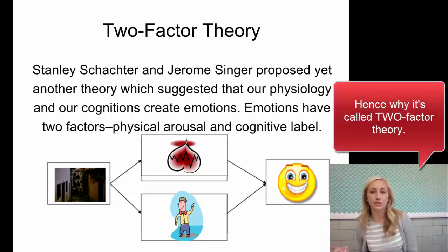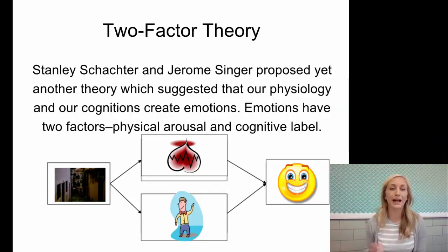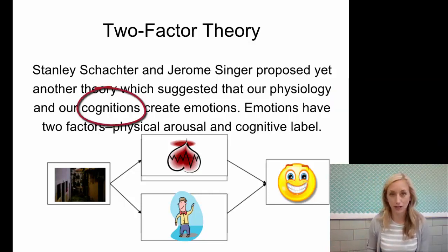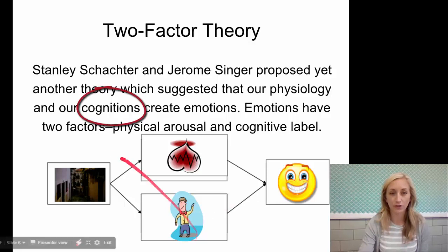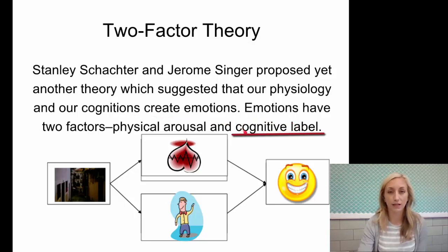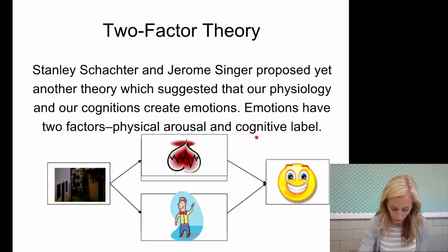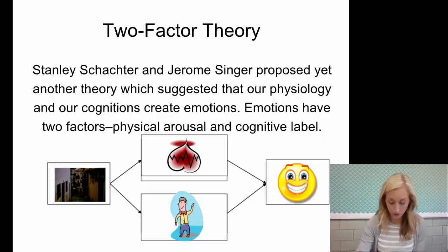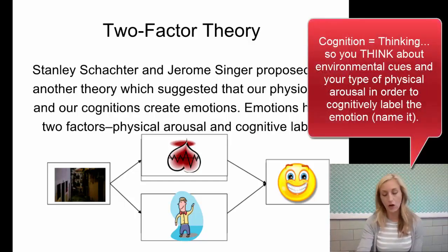They proposed that our physiological responses and our cognitions create emotions. Circle and underline 'cognitions' — engrave it in your brain. Emotions have two factors: the physical arousal and the cognitive label. Write down and engrave 'cognitive label' — that is super, super important. The big thing with this theory is interpreting environmental cues and physical arousal and placing a label on it.